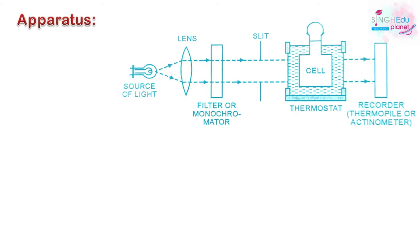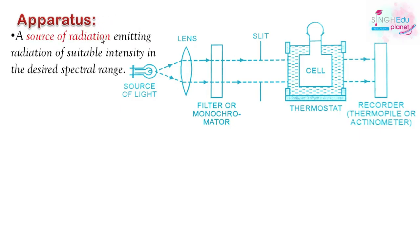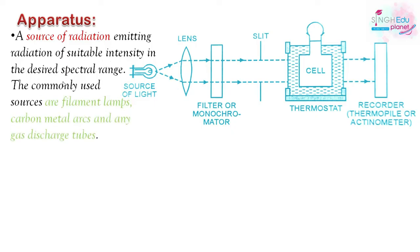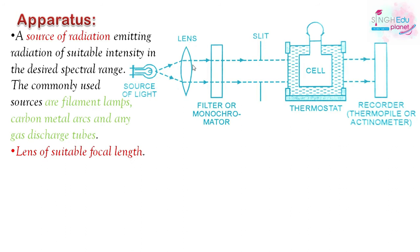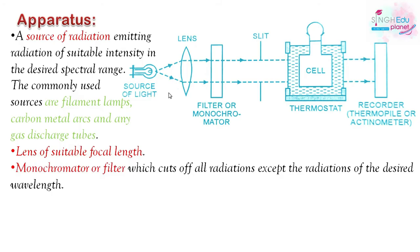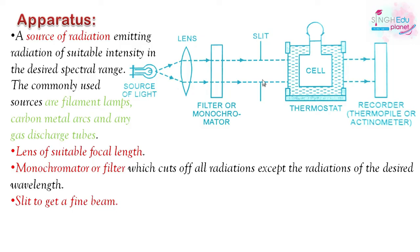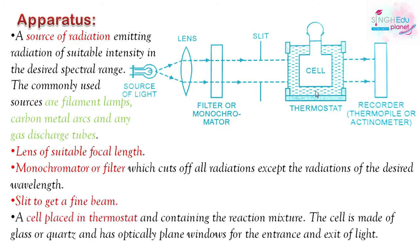Looking at the experimental apparatus, I will explain all parts one by one. First is the source of radiation, which emits suitable intensity light in the desired spectral range — this could be a filament lamp, carbon metal arc, or gas discharge tubes. Then comes a lens of suitable focal length to collimate the radiation, followed by a monochromator, which cuts all wavelengths and passes only one radiation — this is also called a filter. After that is a slit to narrow the radiation.